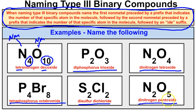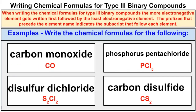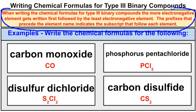Whenever we have a type 3 binary compound — a compound with just two non-metals — we use these prefixes. But what if we're working the other way? If you are given the name and asked to write the chemical formula, the more electronegative element gets listed first, followed by the least electronegative element.